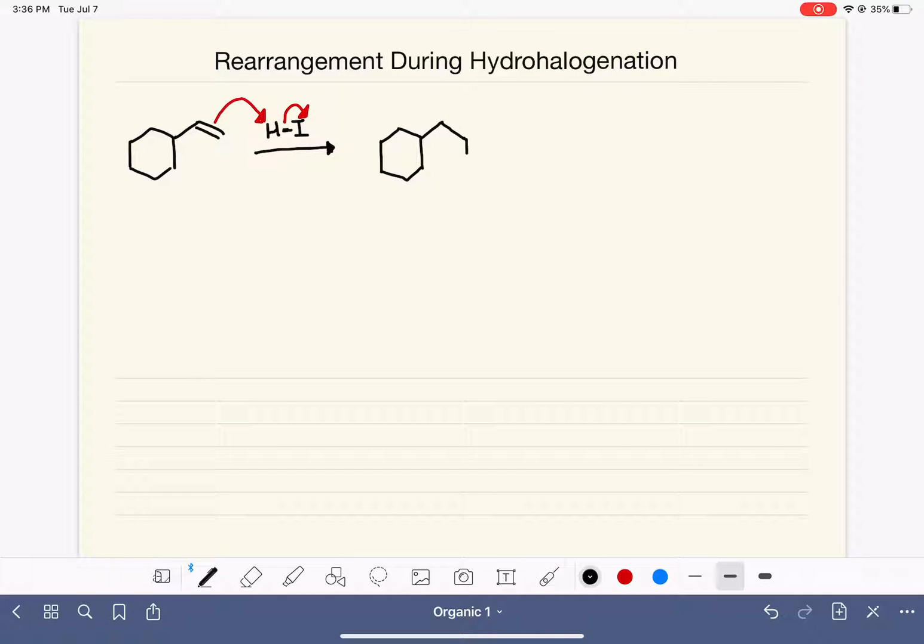Now, even though we're using a line structure, I'm going to go ahead and draw those hydrogens in just for clarity. Draw them in over here as well. The other carbon, which is not getting the hydrogen, does get a positive charge on it. So this is our carbocation.